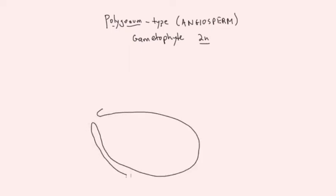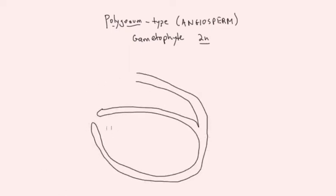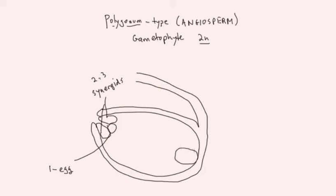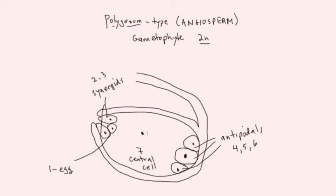For the vast majority of angiosperms, the megagametophyte, or ovule, consists of seven cells with eight nuclei. In addition to the egg cell (cell number one), there are also two synergids (cells two and three) that sit on either side of the egg. These three cells sit together near the opening — the micropyle — of the ovule. At the opposite end of the ovule are three antipodal cells (cells 4, 5, and 6). Occupying the middle portion of the ovule is a central cell (cell number 7) with its two haploid nuclei (nucleus number 7 and nucleus number 8). This 7-cell, 8-nucleus structure is the full extent of the multicellularity of the typical angiosperm megagametophyte.